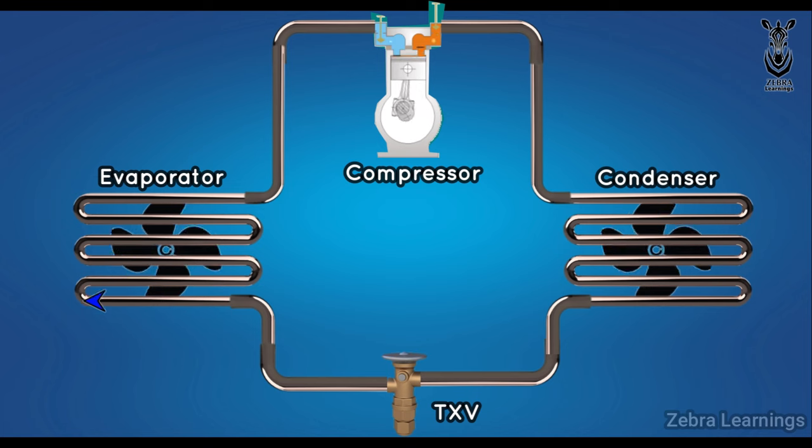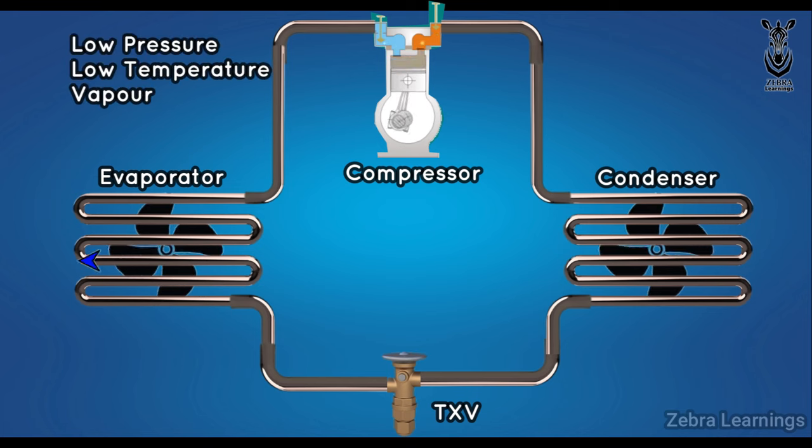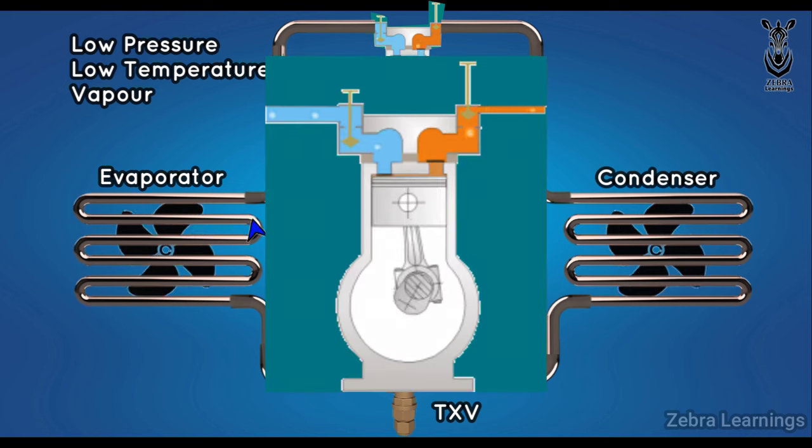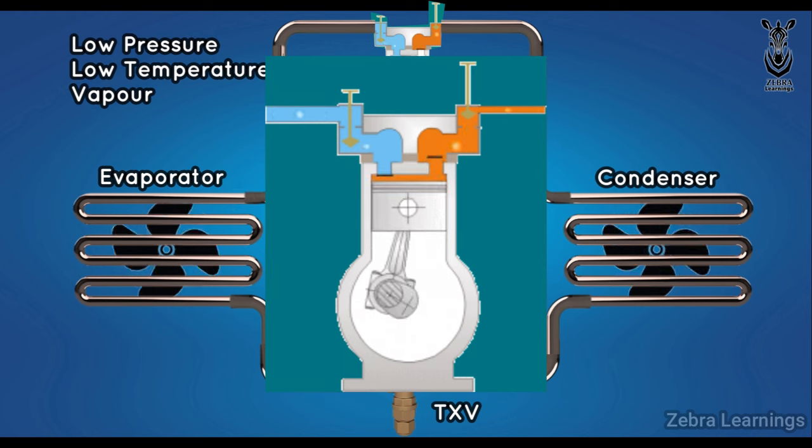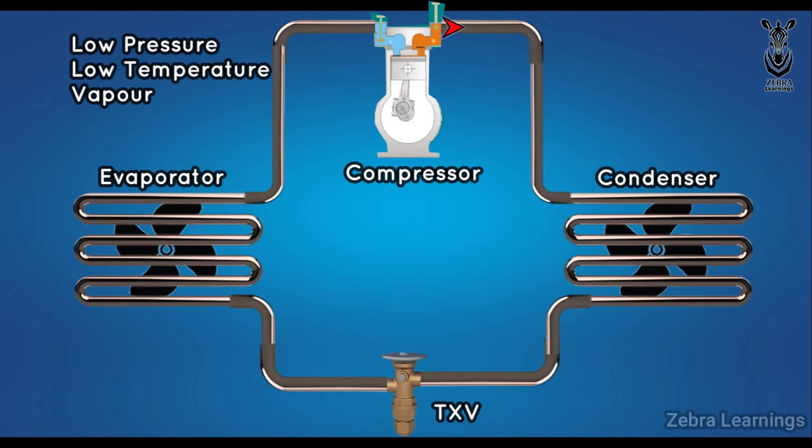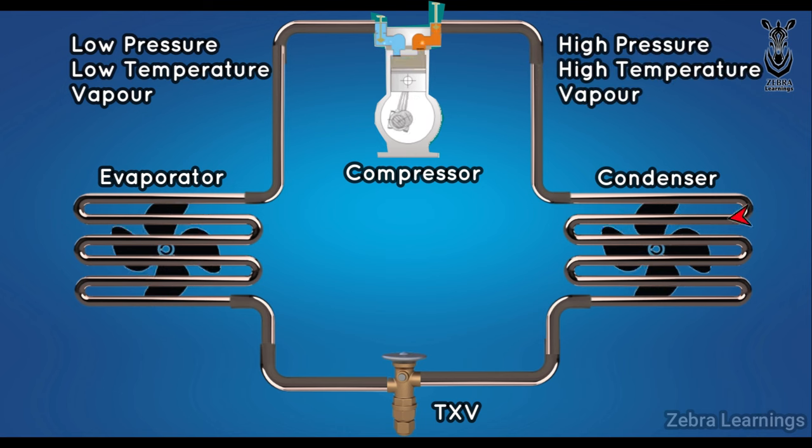Refrigerant enters the compressor at low pressure, low temperature, and vapor state. The compressor compresses the refrigerant well and sends it out. When it comes out of the compressor, the refrigerant is at high pressure, high temperature, and vapor state.